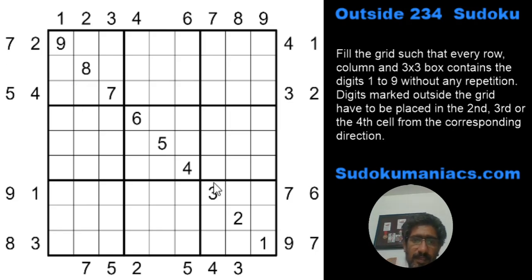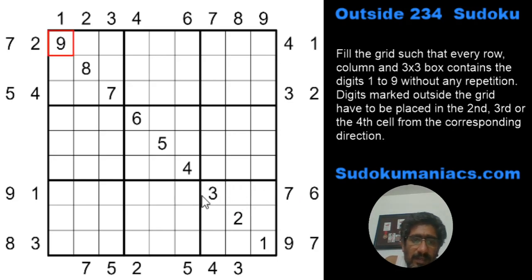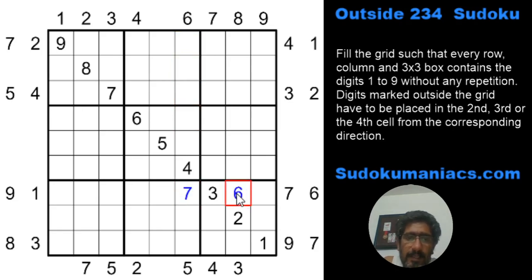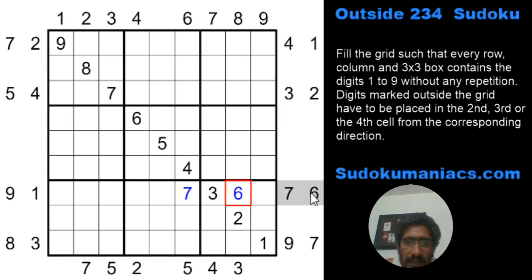The first thing I notice is the 3 given in row 7, column 7. To the right I have clues 6 and 7, which have to be in one of these three cells. One is blocked by the 3, so these must be a 6 and a 7. Since the 6 of column 4 must be in one of these three cells, this cannot be a 6 — so that becomes a 7, and this becomes a 6. I mark out completed digits to stay focused.